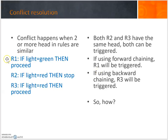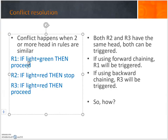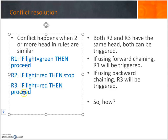Using forward chaining, we start with Rule 1. If the condition is 'light is red', we move to Rule 2 which says stop. In backward chaining, if the goal is 'proceed', both Rule 1 and Rule 3 match, so the machine cannot deduce whether the current light is green or red. This illustrates the ambiguity caused by conflicting rules.